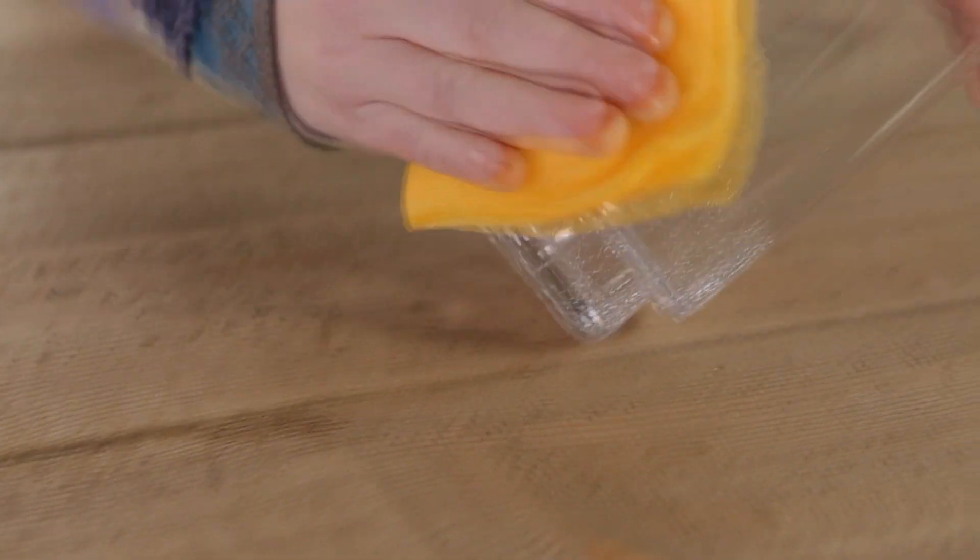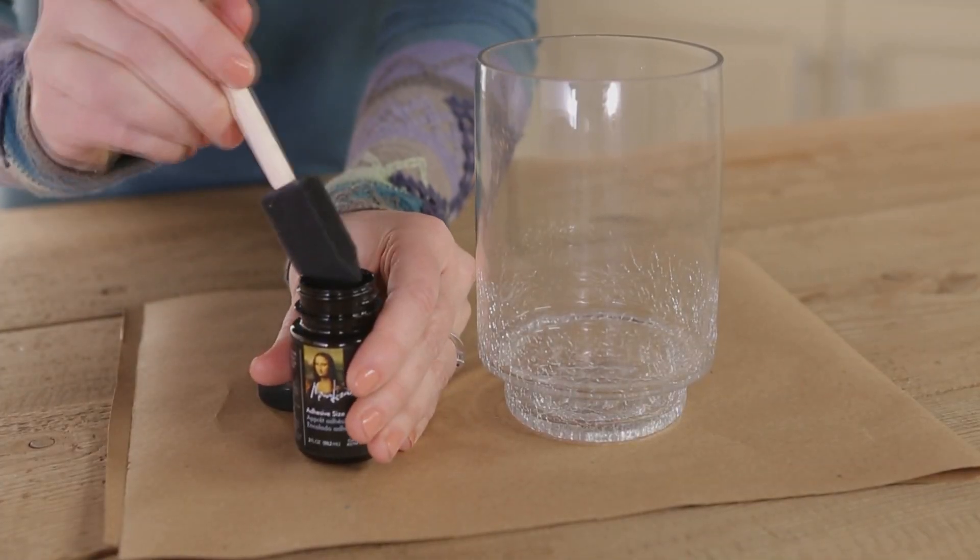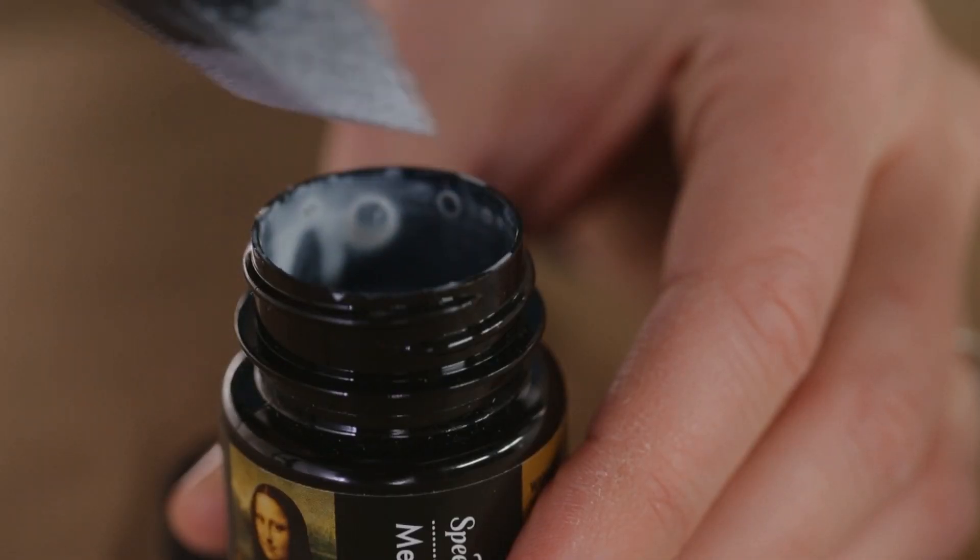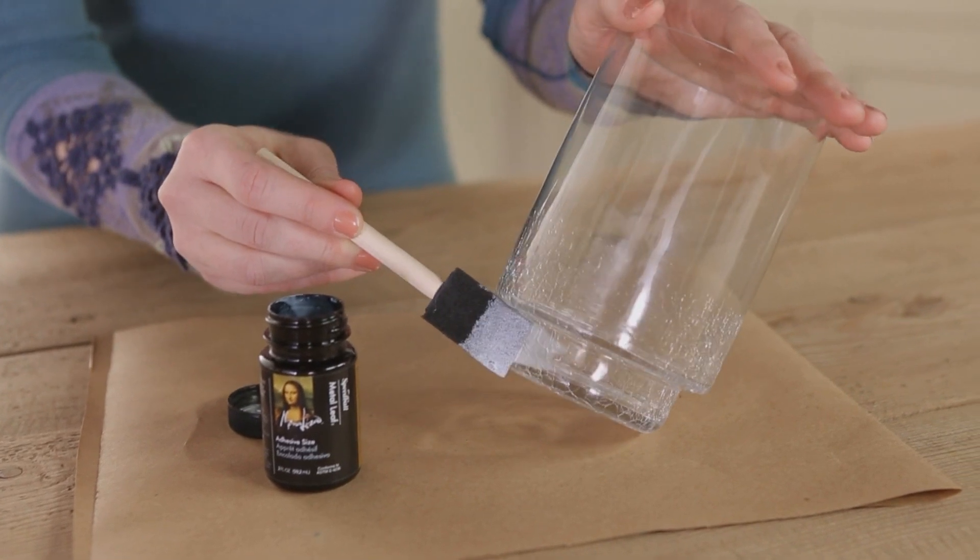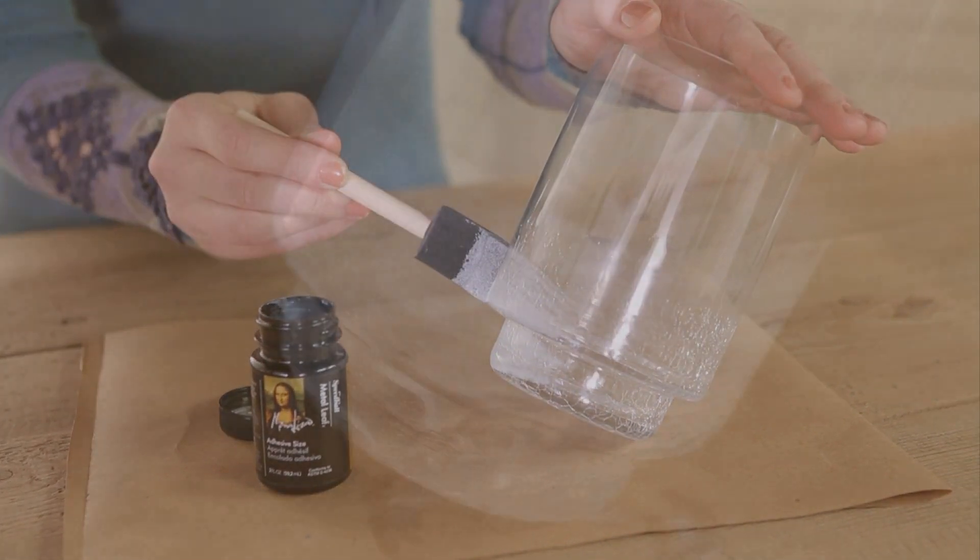Prep the vase. Wipe off dust with a tack cloth. Apply a thin, even coat of adhesive with a foam brush. Let it sit 30 minutes or until the surface is tacky and the adhesive changes from white to clear.